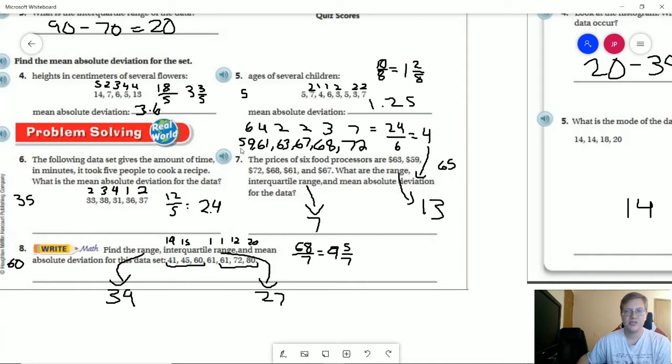Our range goes from 72 back to 59, which is going to be 13. Our interquartile range, again, we're working with six data points. So we'd be doing 68 minus 61 for that, and that would be seven.